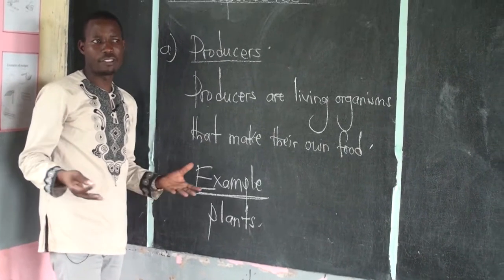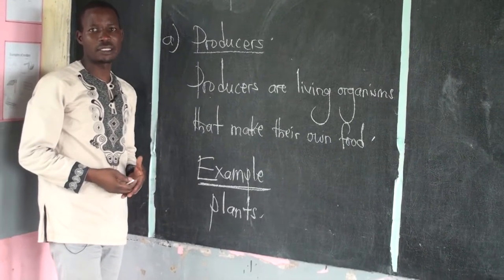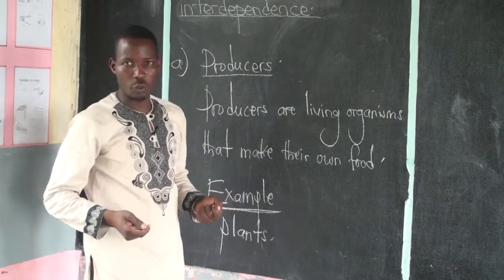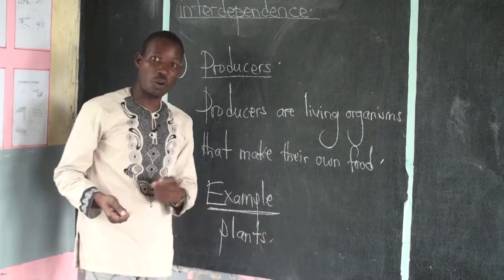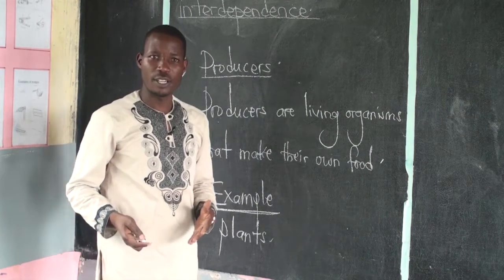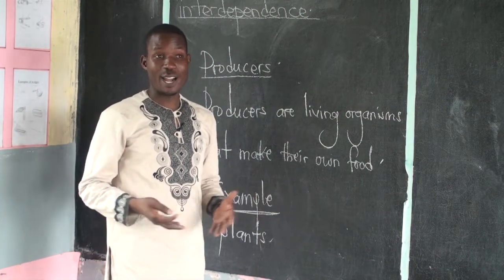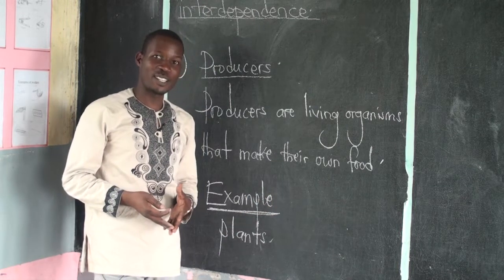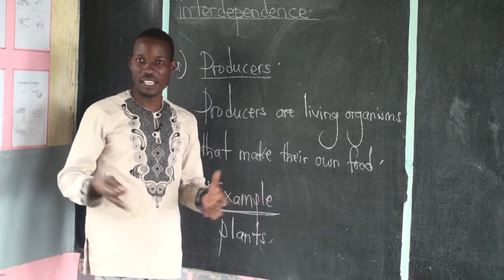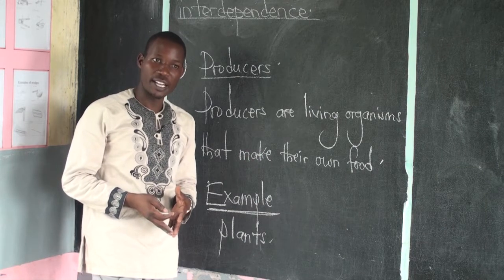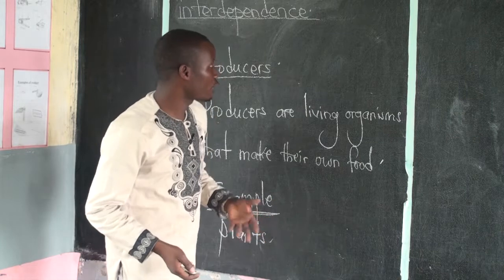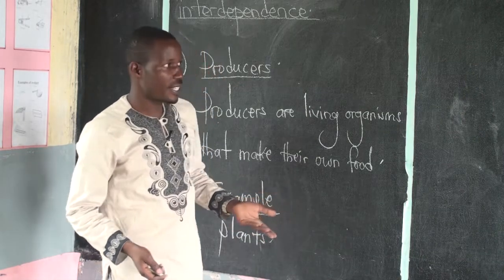We looked at photosynthesis last time and defined it as the process by which plants make their own food — or manufacture their own food called starch. They can ask you in exams: what are the conditions for plants to make their own food? This is quite easy for you. If you want to get them easily, never forget this — I can give you a guideline here.